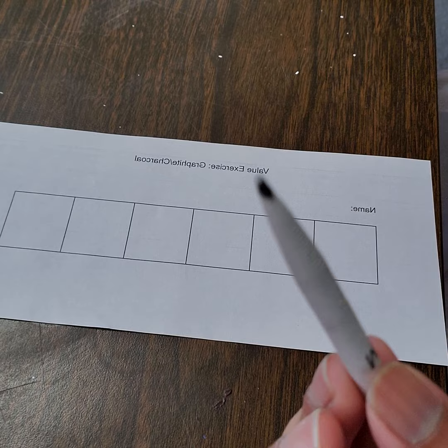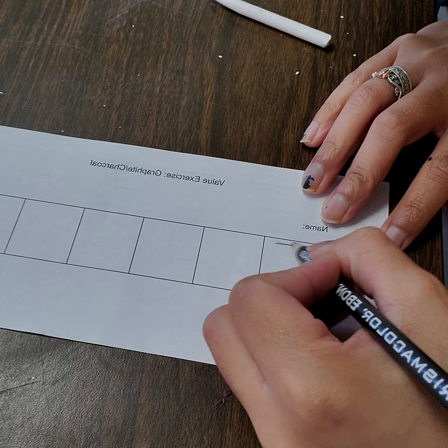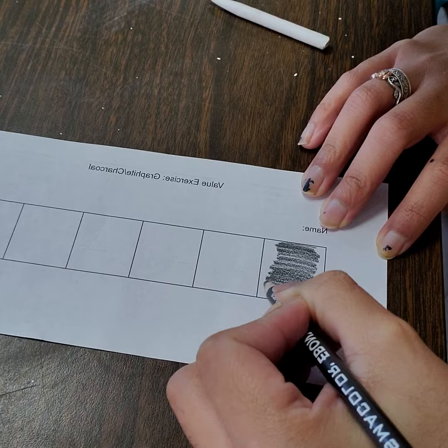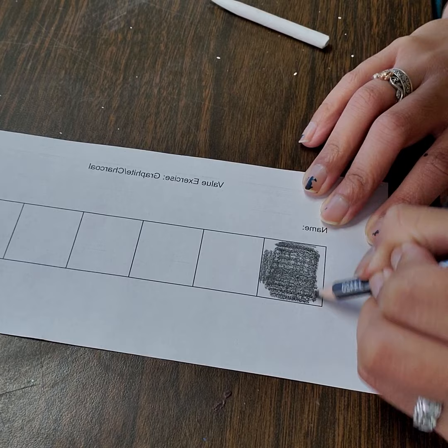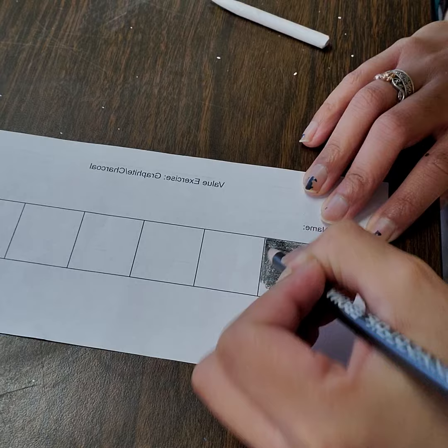The first thing we're going to do is take our ebony pencil and in the first square we're going to color in completely dark. Now the reason I am not currently coloring it in really dark and pressing hard on the pencil is because I don't want to damage the pencil. I don't want to break the lead off right off the bat.